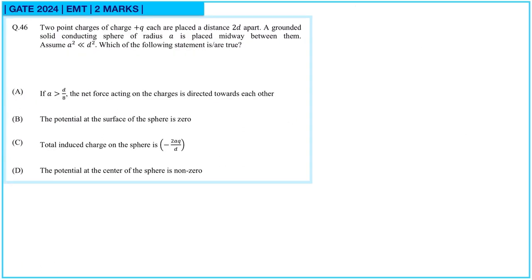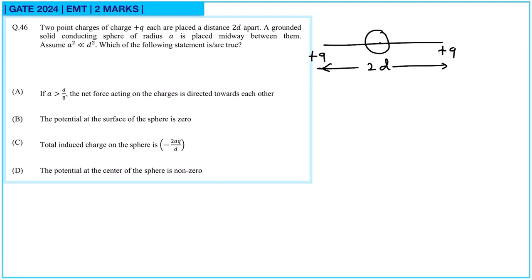Next question. Two point charges of charge +q each are placed at a distance 2d apart. A grounded solid conducting sphere of radius a is placed midway between them. Since it is grounded it is connected to ground, so its potential will be 0. Assume a² is much smaller than d². Which of the following statements are true?